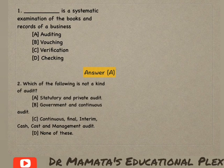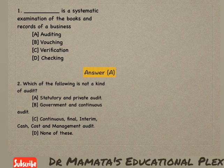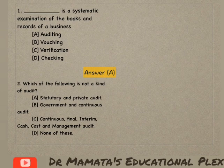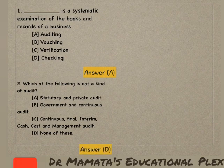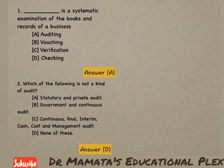Next: which of the following is not a kind of audit? Options: Statutory and private audit; Government and continuous audit; Continuous, Final, Interim, Cash; Cost and Management audit; None of these. The answer is 'None of these' — which kind of audit is not a kind of audit? Option D, none of these, is the correct answer.